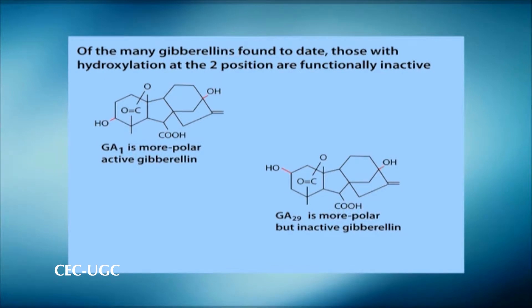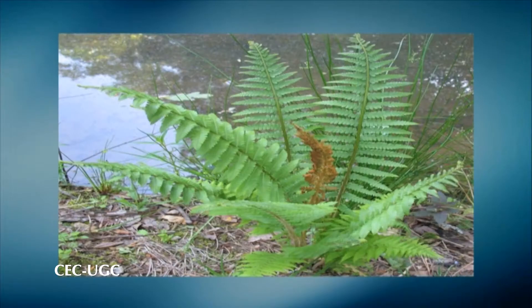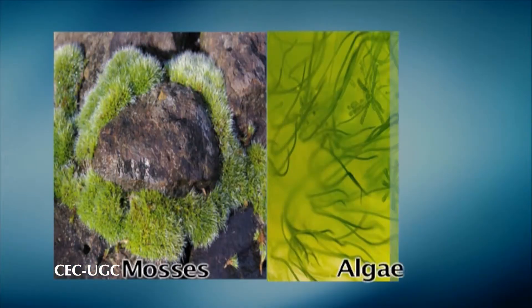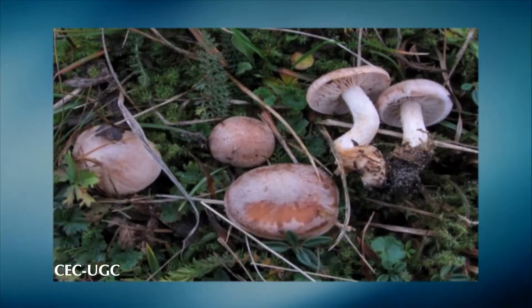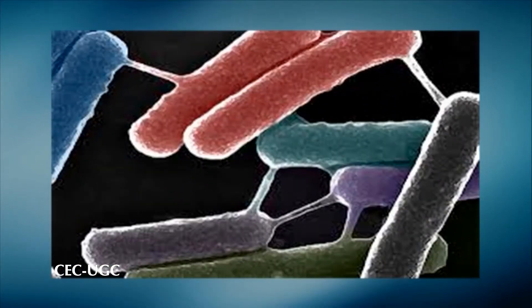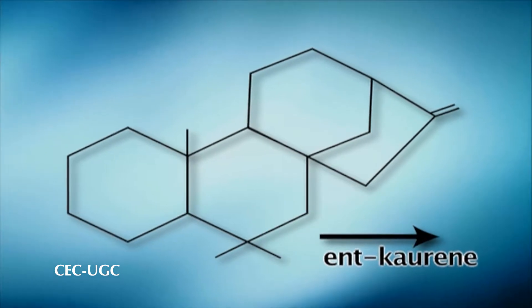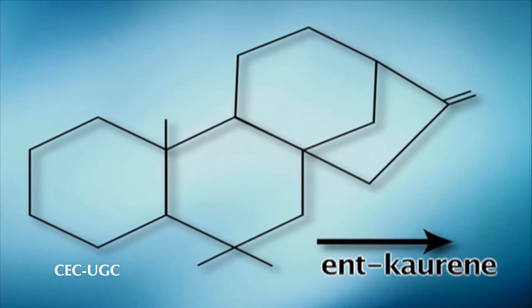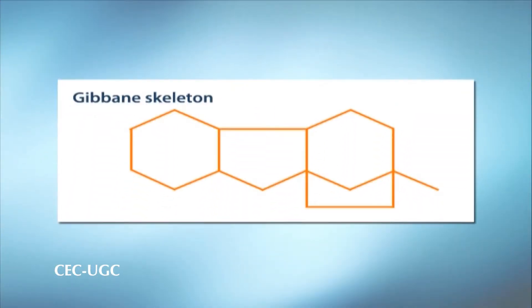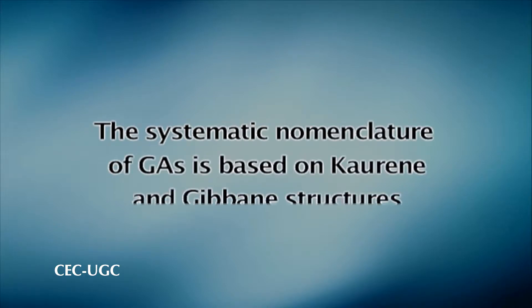GAs form a metabolic sequence, and some inactive GAs are metabolic products of active GAs. GAs are widespread and ubiquitous in flowering plants and non-flowering plants such as gymnosperms and ferns. They have also been isolated from lower plants such as mosses and algae, at least two fungal species, and most recently from two bacterial species. Gibberellins are diterpenoid acids derived from tetracyclic diterpenoids known as corine. The basic carbon skeleton of GA is known as gibane, and the systematic nomenclature of GA is based on the corine and gibane structure.